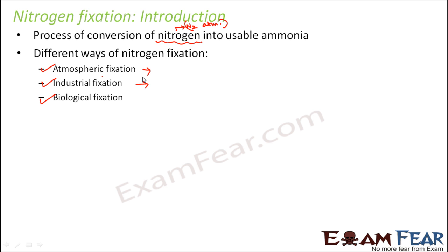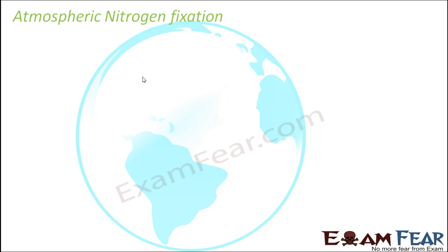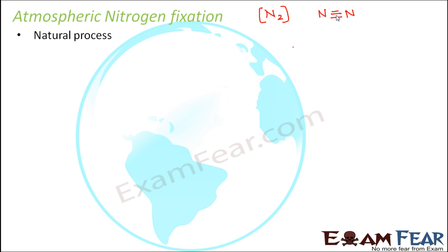Let us look at atmospheric nitrogen fixation. In the atmosphere, nitrogen is present as dinitrogen gas — a nitrogen molecule with two atoms joined together by a triple bond. The strength of a triple bond is quite huge. If you want to break this bond, you need to supply a really high amount of energy.